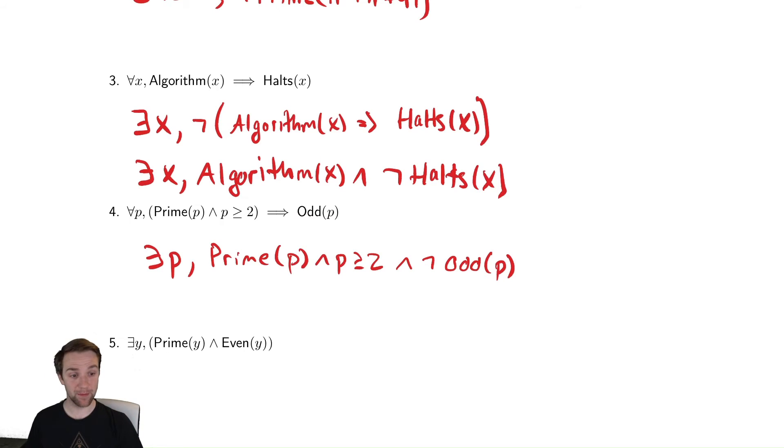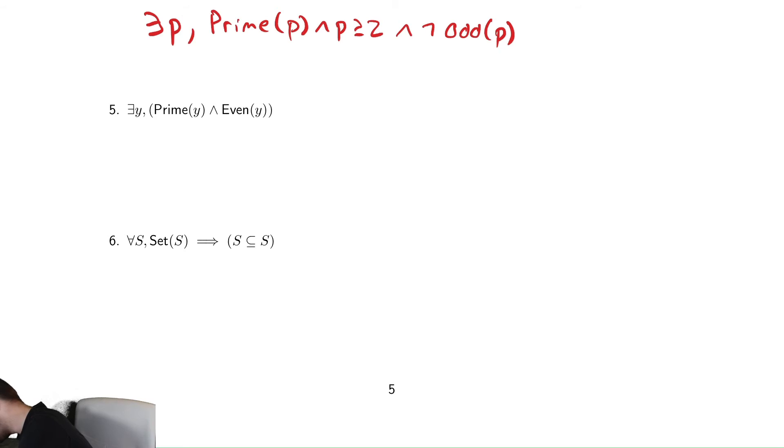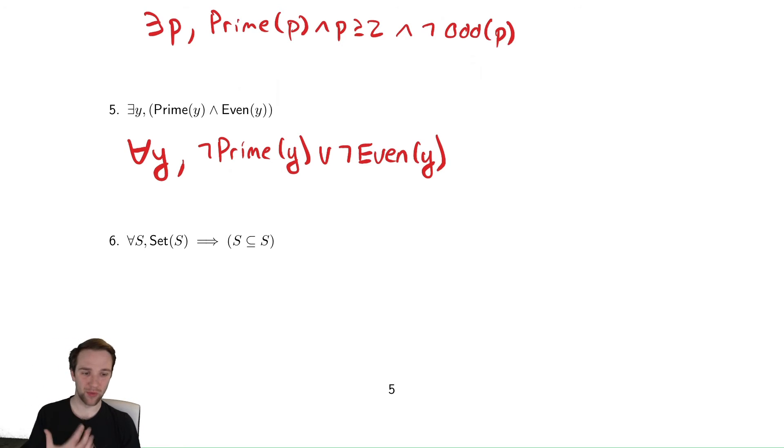Our next example says that there is an even prime number. So let's write this as the negation which is for all because it was a there exists. Then we have an and. The negation of an and according to DeMorgan's laws is not or not. So we have for every y is either not prime or it is not even.